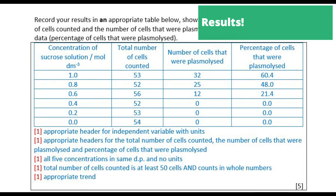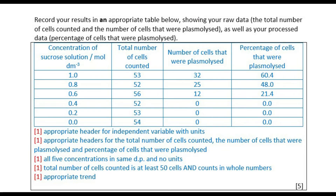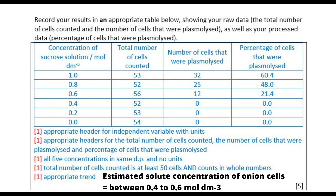Here are my final results. According to the instructions, we need to draw a table with our raw data as well as our processed data. There are four columns showing raw data — total number of cells and number of plasmolyzed cells — and processed data, which is percentage of cells plasmolyzed. We can see a satisfying trend: for concentrations 1, 0.8, 0.6, and 0.4, the percentage of plasmolyzed cells decreases as concentration decreases. Because there are 0% plasmolyzed cells at 0.4 mol/dm³, we can estimate that the solute concentration of the onion cells is probably between 0.4 and 0.6 mol per dm³.